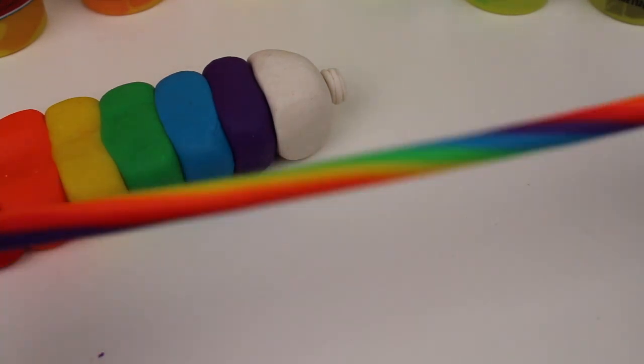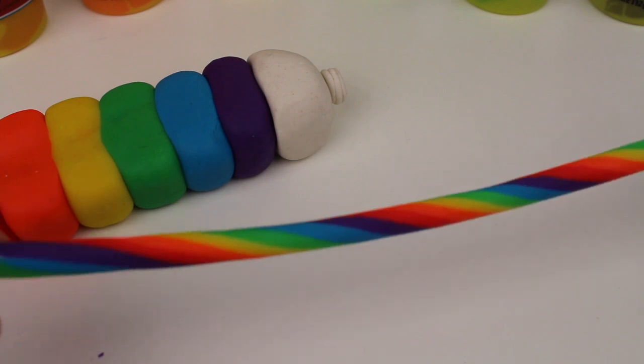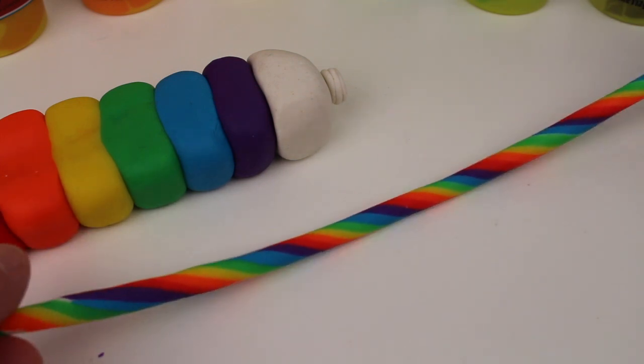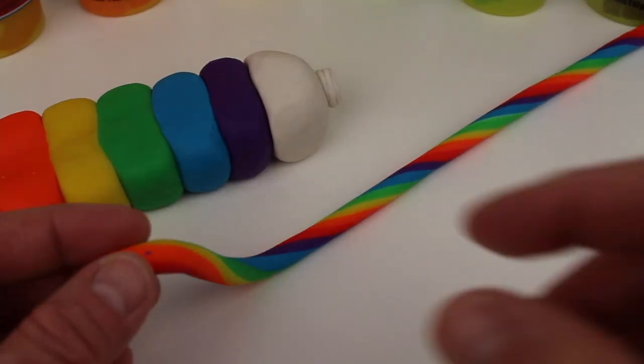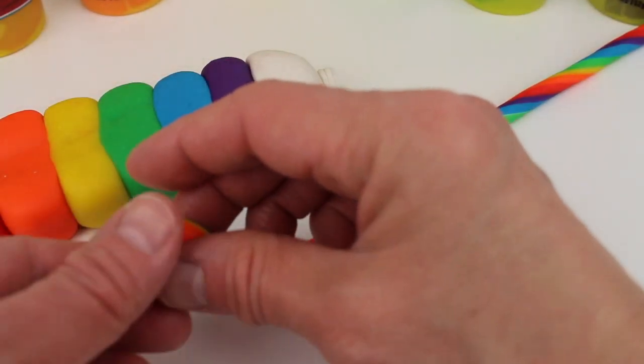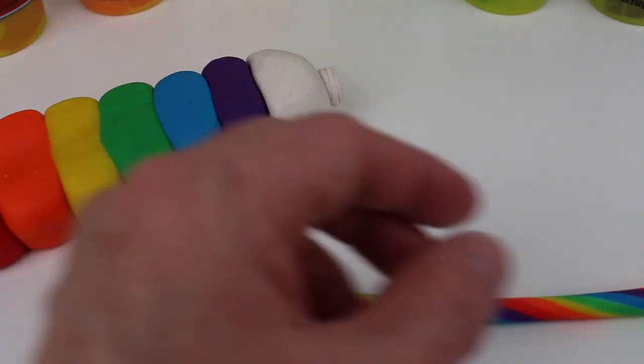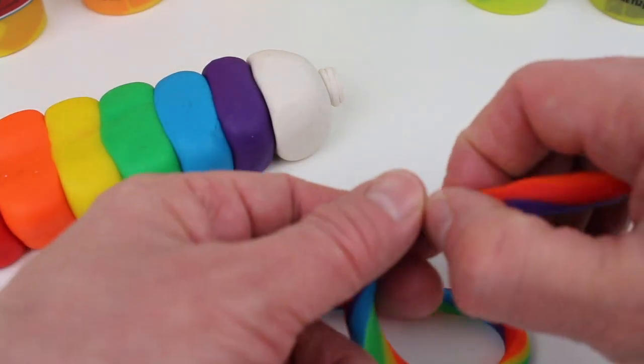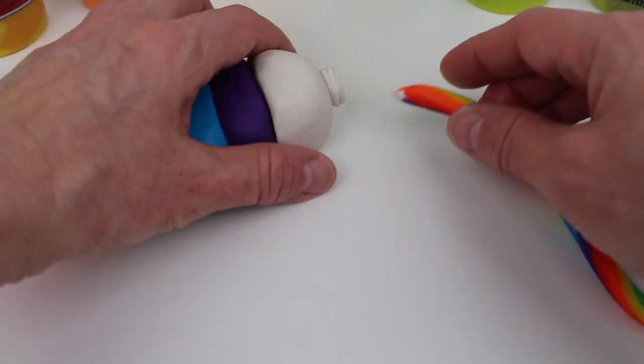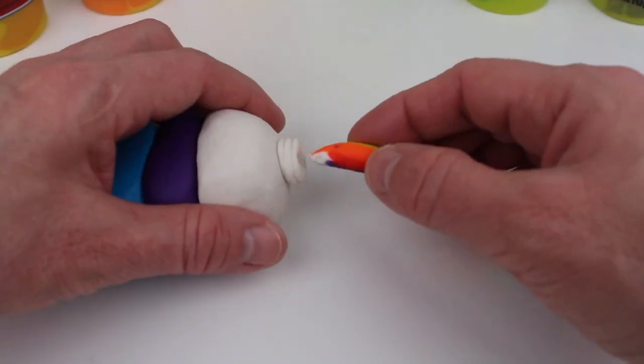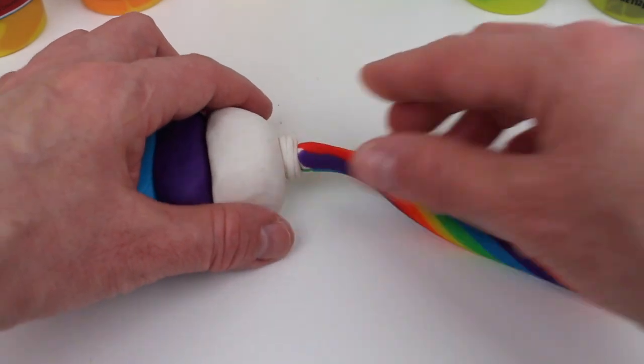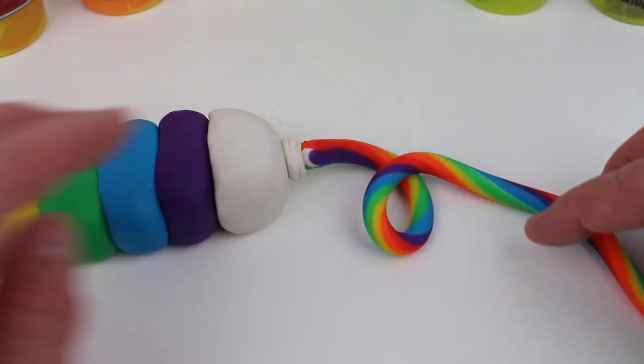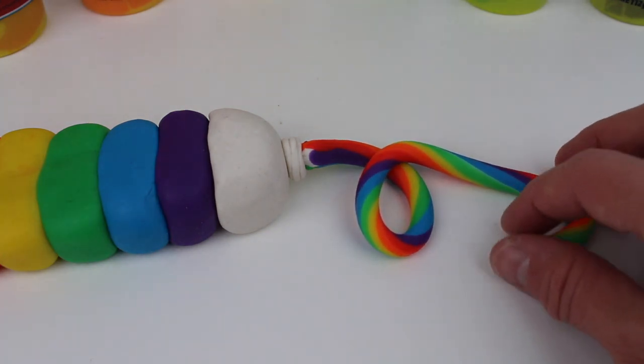And twist so that it makes a rainbow color. Now add it to the tube of toothpaste. Look! We squeezed toothpaste from the toothpaste tube.